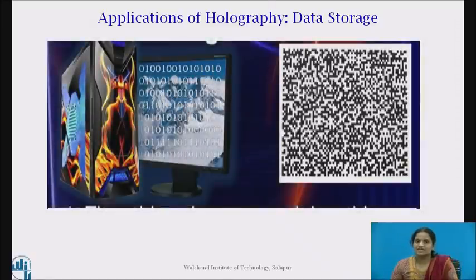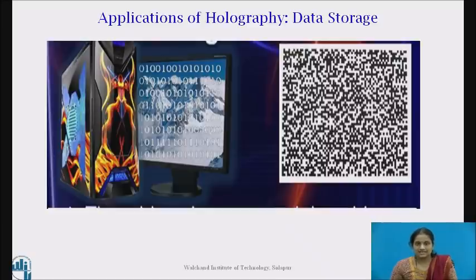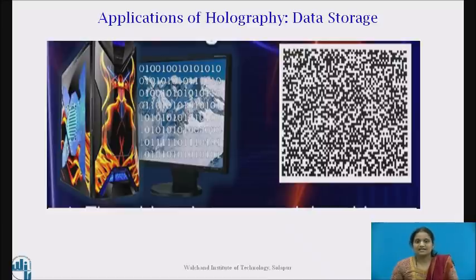Another application is data storage. Holograms can be used for data storage devices and are of much use in computer technology. A large amount of information — as many as 10¹² letters or digits — can be stored in a cubic centimeter of a volume hologram. The object is converted into binary code of ones and zeros. The ones and zeros are converted into a matrix of light and dark squares, which are electronically sent through a modulator. The laser beam shines through a special light modulator whose pixels filter — blocking or allowing light — thus encoding data into the laser beam. These memories have long lifetimes because small mechanical damage to a portion of a hologram will not erase the stored information.